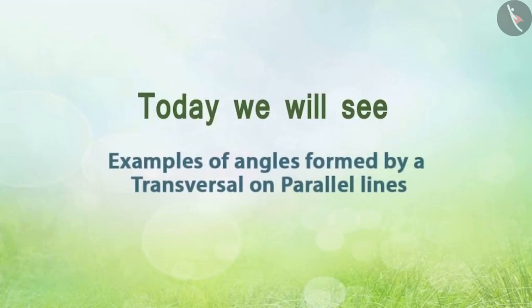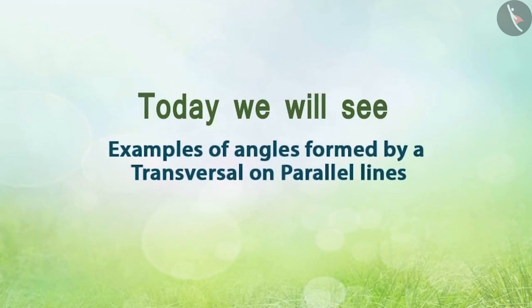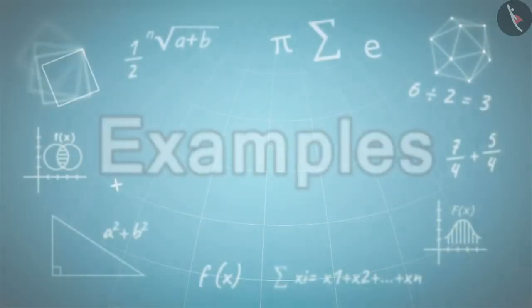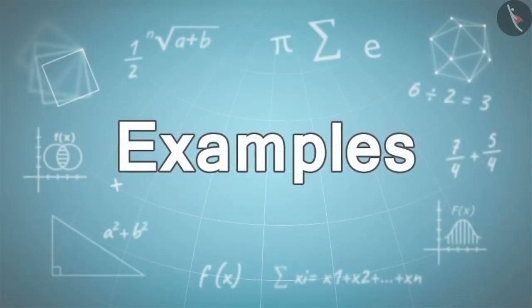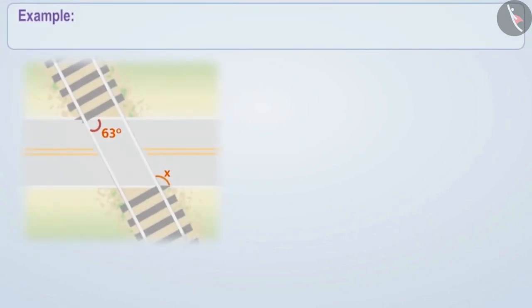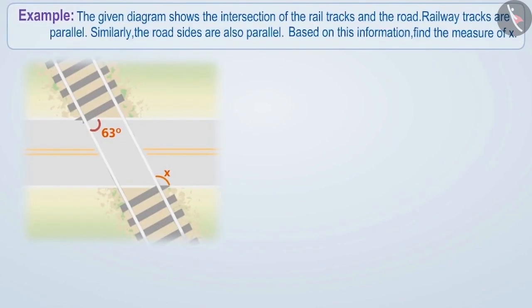Today we will see examples of angles formed by transversals on parallel lines. The given diagram shows the intersection of rail tracks and road. The railway tracks are parallel, and the roadsides are also parallel. Based on this information, find the measure of x.